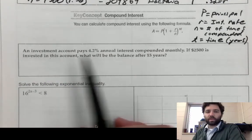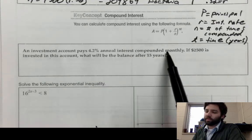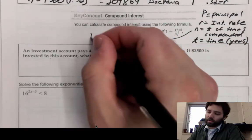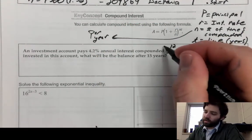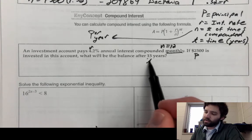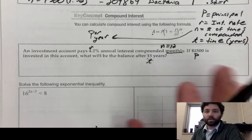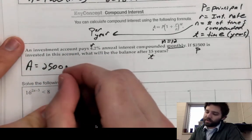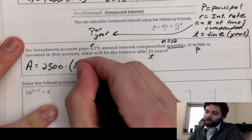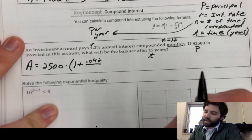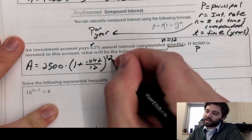Example: an investment account pays 4.2% annual interest compounded monthly. Compounded monthly means n equals 12 times per year. The interest rate r is 0.042, the principal P is $2500, and t is 15 years — we want to know the final amount A. So A equals 2500 times (1 plus 0.042 divided by 12) raised to the power of 12 times 15.